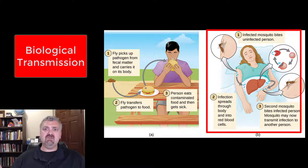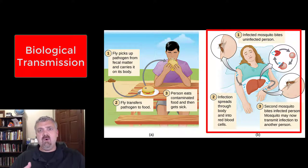Now biological transmission is generally more complicated. In the first case of mechanical transmission, the fly wasn't actually sick, right? It was just carrying it on its body and physically moving it around. So biological transmission is going to be more complicated. But here we see an example.